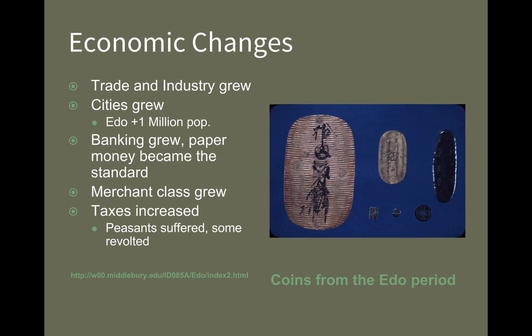The merchant class grew despite their low position on the social hierarchy, showing that outside influence on Japan was very strong. There was also an increase in taxes, which occasionally caused peasants to revolt against the government. The government eventually tries to put restrictions on trade, seeing foreign exposure as threatening. But the trade networks were already so well established that traders from places like China, the Netherlands, Korea, and England continued trying to have influence in Japan even after the government tried to restrict trade.